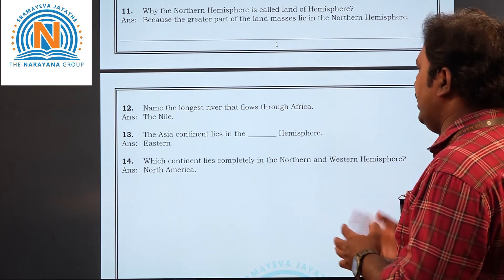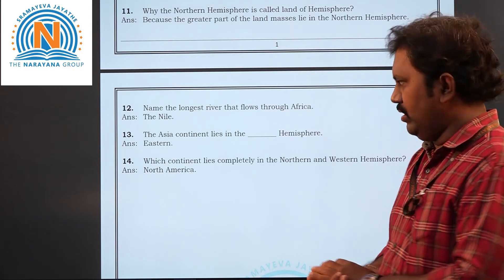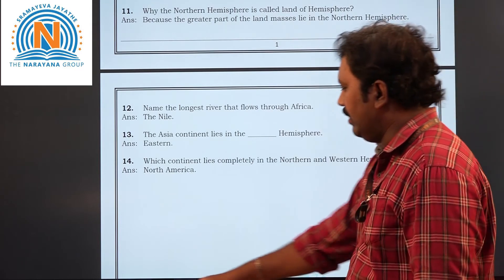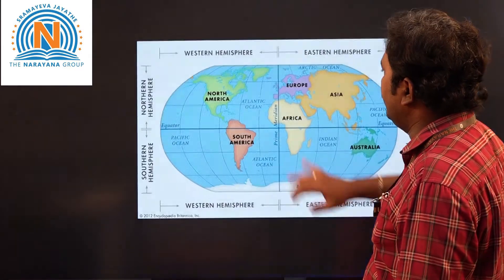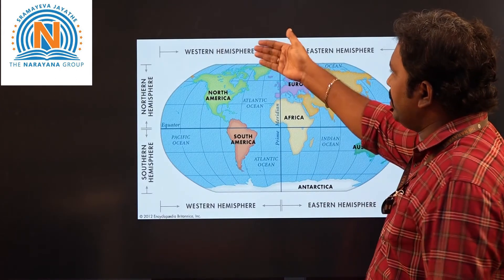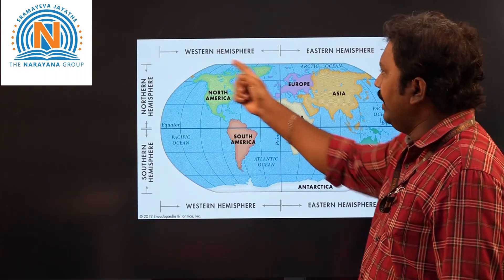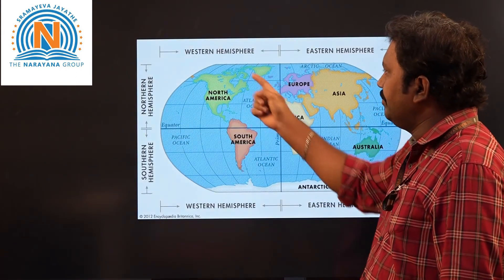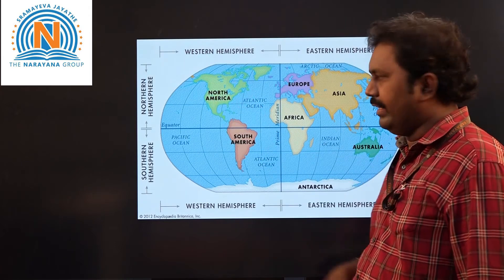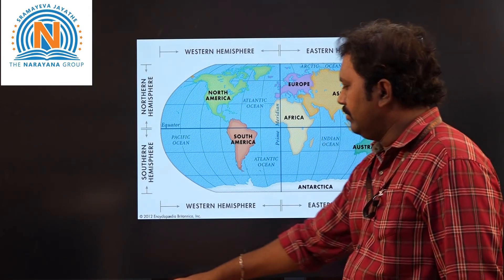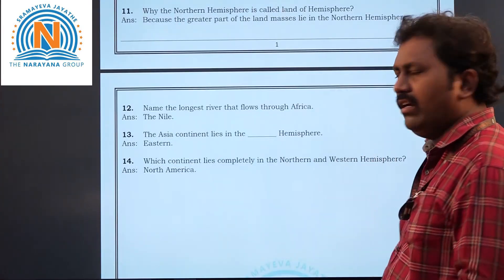Now the fourteenth and last question: which continent lies completely in the northern and western hemispheres? The answer is North America. Let us see here — completely located in the western hemisphere and northern hemisphere is North America. Clear, children?